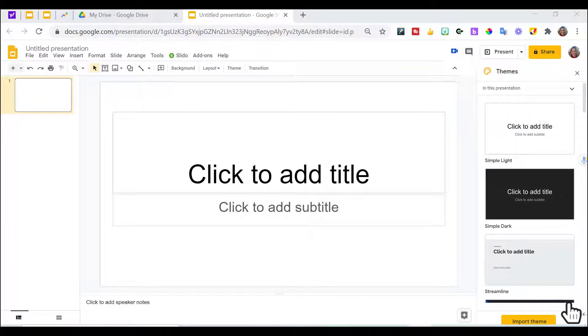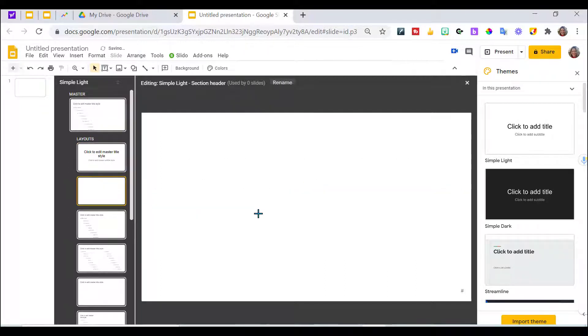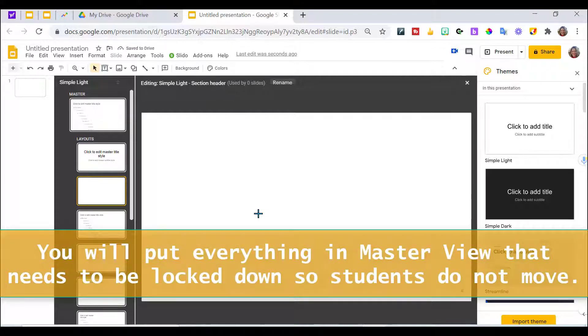So for the drag-and-drop activity, I start in Google Slides and I'm going to go up here to View and Master View. Go down a couple of slides. The first ones really control all the fonts and everything. Highlight and delete. In the Master View, I want to create everything that I do not want the students to move.